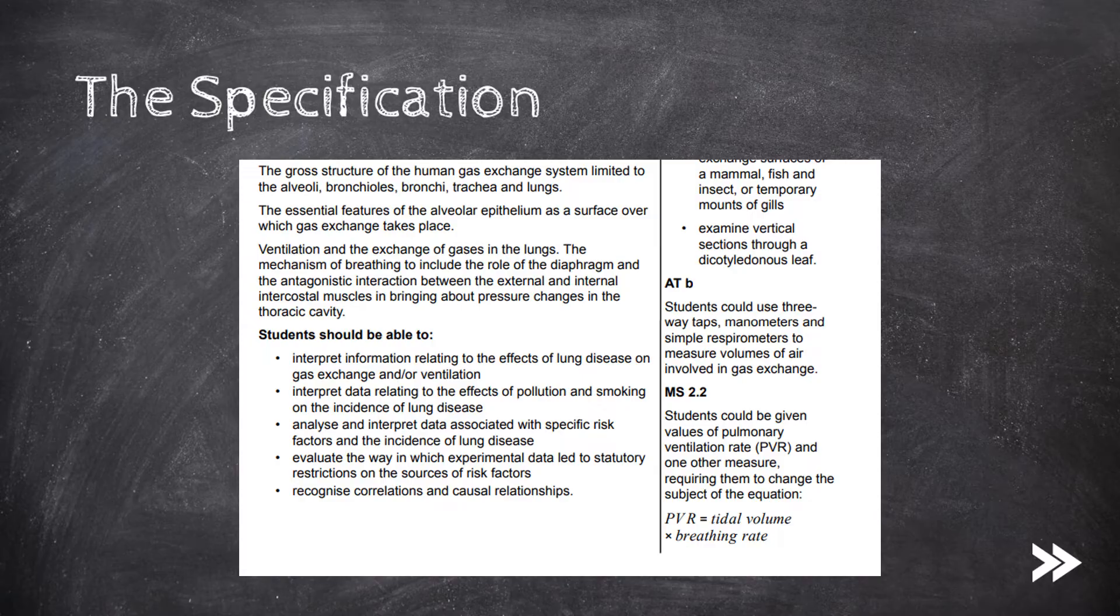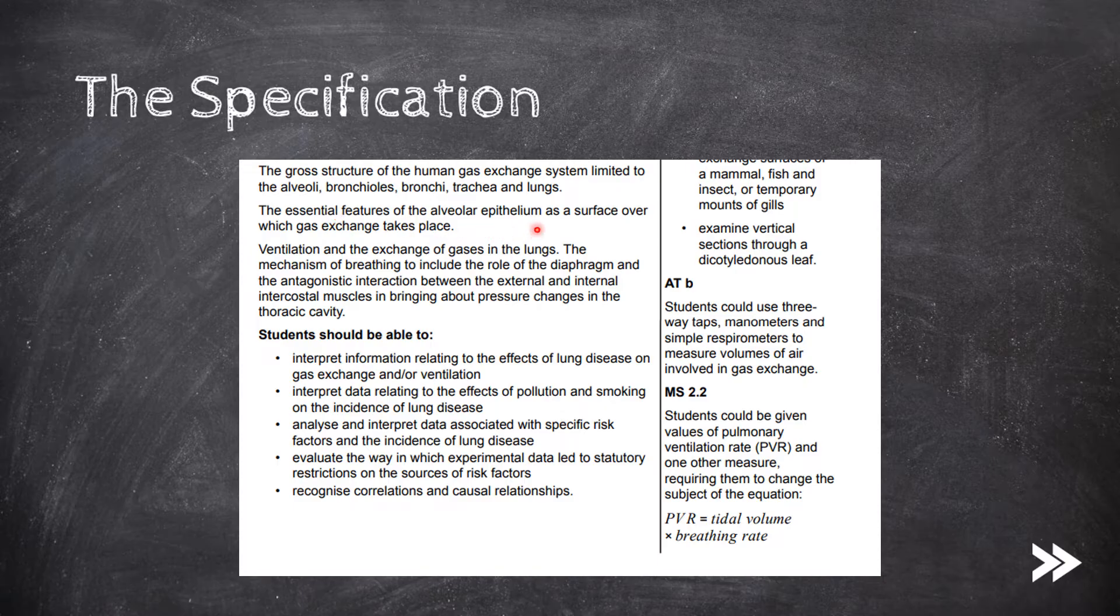In part 2, we'll then move on to the structure of the human gas exchange system, the essential features of the alveolar epithelium and how this is adapted for efficient gas exchange, and then finally the antagonistic interaction between the external and internal intercostal muscles as well as the role of the diaphragm in facilitating ventilation.